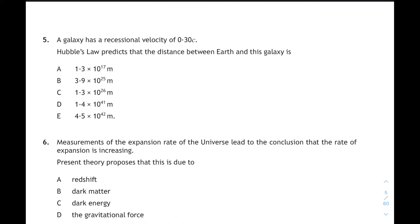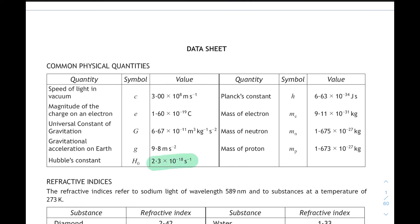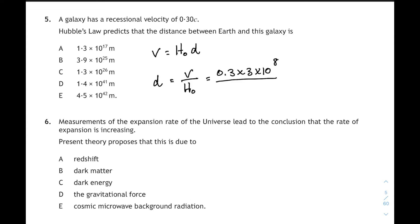A galaxy has a recessional velocity of 0.3 times the speed of light. Hubble's law predicts the distance between the Earth and the galaxy is? Well, we need our Hubble's law equation. V equals Hubble's constant times D. Rearrange it. So D equals V over the Hubble constant. You will find both those constants on your datasheet. The speed of light, 3 times 10 to the 8. It's 0.3 times 3 times 10 to the 8. And the Hubble constant, 2.3 times 10 to the minus 18, is on your datasheet at the front of the exam paper. So there's the substitution in. Remember, none of your rough working is marked, but lay it out clearly. Make sure you double-check your calculations. 3.9 times 10 to the 25 meters corresponds to answer B.